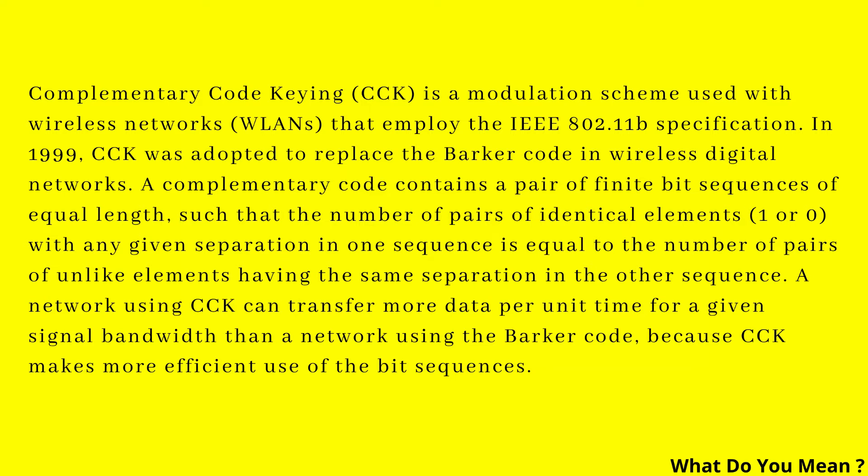A complementary code contains a pair of finite bit sequences of equal length, such that the number of pairs of identical elements, 1 or 0, with any given separation in one sequence, is equal to the number of pairs of unlike elements having the same separation in the other sequence.